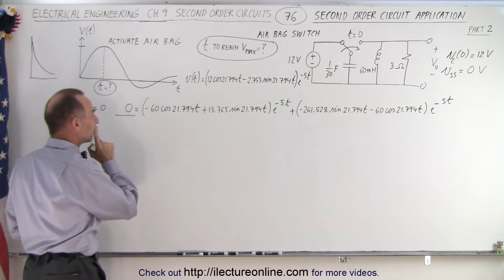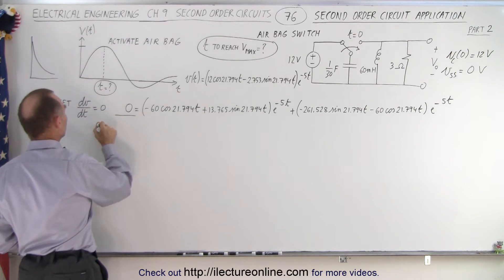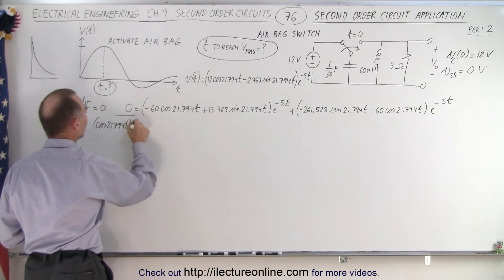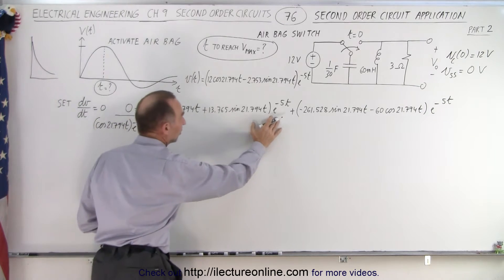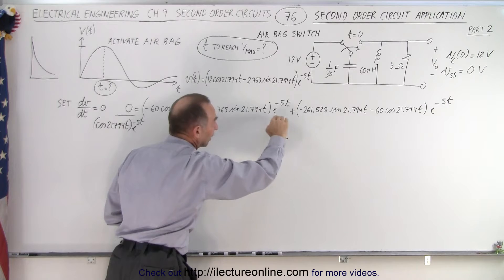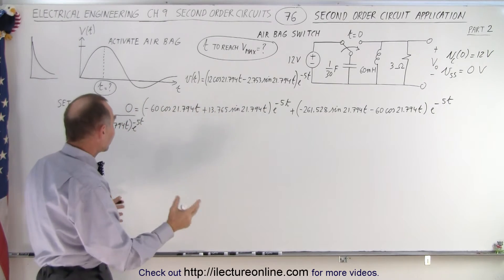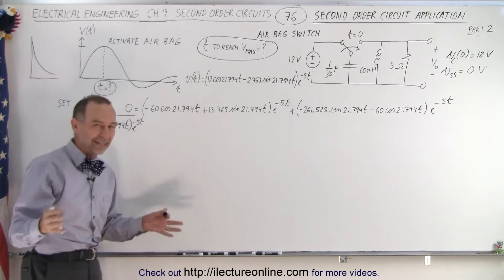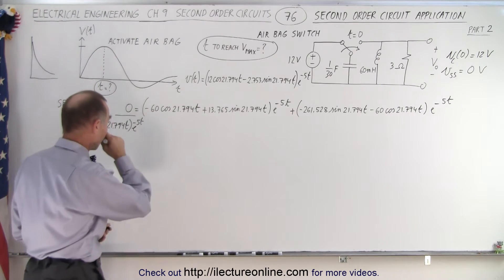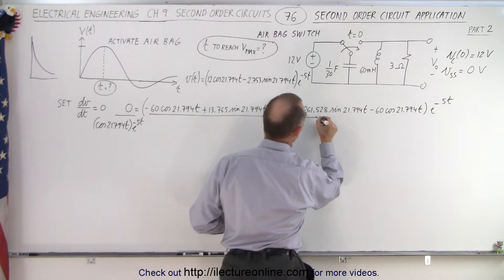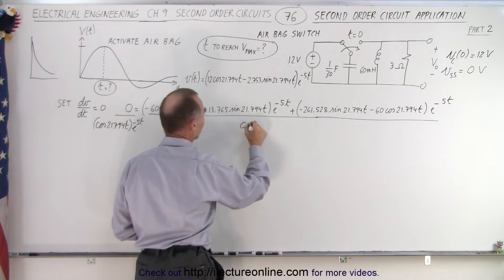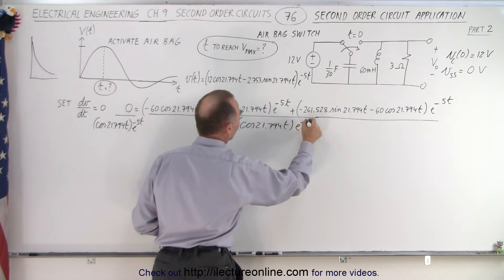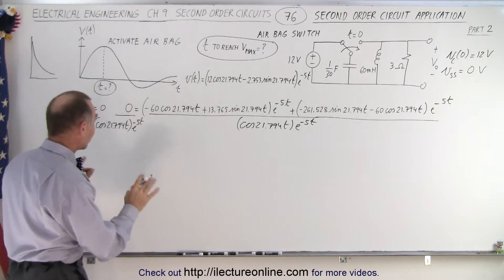But notice we can actually simplify that with a neat mathematical trick. What if we divide both sides of the equation by the cosine of 21.794t multiplied times e to the minus 5t? Because essentially we know that this is simply an exponential decay, so that has nothing to do with finding that first maximum. And if we divide both sides of the equation by the cosine, notice that the cosine will drop out and the sine divided by cosine becomes a tangent. That makes the whole equation a whole lot easier to work with.